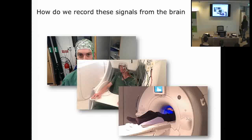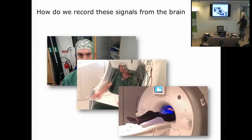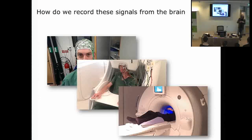Both EEG and MEG analysis can become much more accurate with source reconstruction. Here at the Donders, we always get an anatomical MRI scan after each MEG experiment. It's easy for us because the MEG scanner and MRI scanner are in the same building. For EEG researchers, MRI access is often less convenient or expensive, but we'll discuss how to make your analysis as accurate as possible given the data you have.